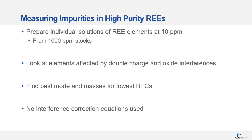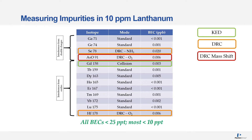Now let's look at measuring impurities in high purity rare earth elements. For this study we prepared individual solutions of rare earth elements at 10 ppm from 1000 ppm stocks, then looked at elements affected by double charging or oxide interferences to find the best BECs. No correction equations were used. The color coding in the tables indicates the measurement mode: green boxes are KED mode, orange boxes are DRC mode, and red boxes are DRC mass shift mode.